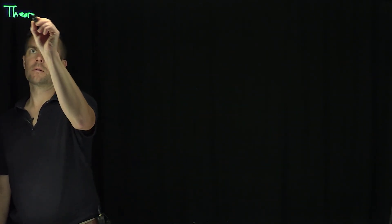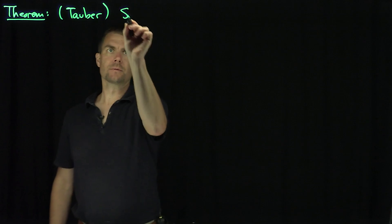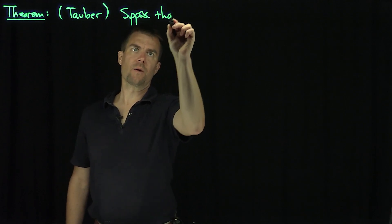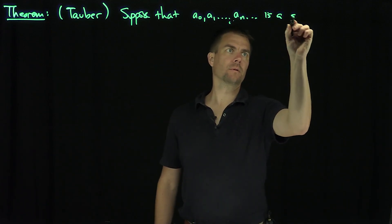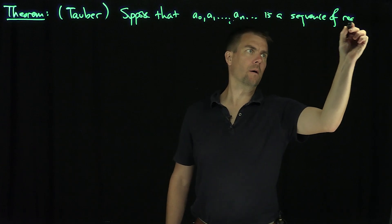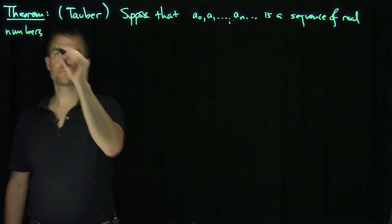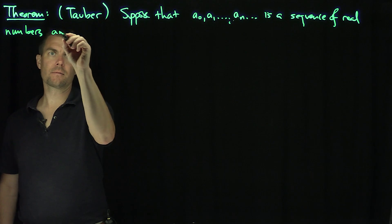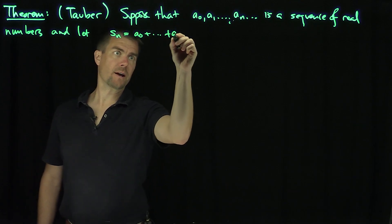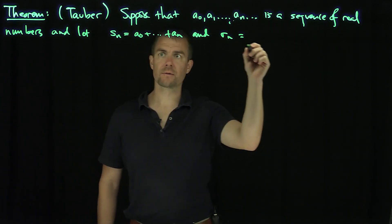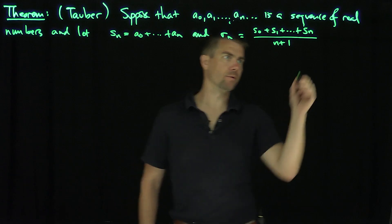Our theorem is the following. Suppose that a_0, a_1, ..., a_n is a sequence of real numbers. Let S_n be the partial sums — a_0 all the way down to a_n — and σ_n the Cesaro means, so (S_0 + S_1 + ... + S_n) / (n + 1). Those are the Cesaro means.